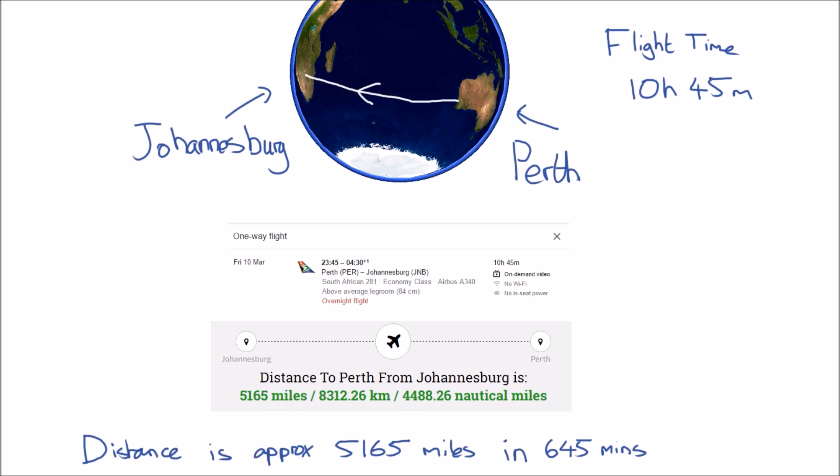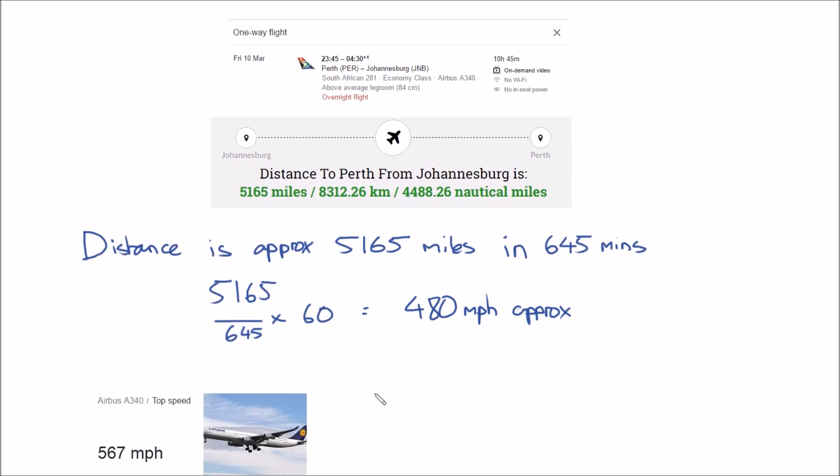As we can establish, it takes 10 hours and 45 minutes, which in minutes is 645 minutes. So if you divide through by 645 times it by 60, this gives us an average speed of 480 miles per hour approximately throughout the journey.